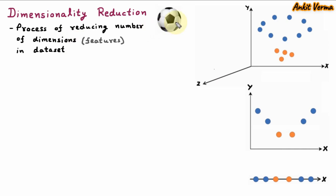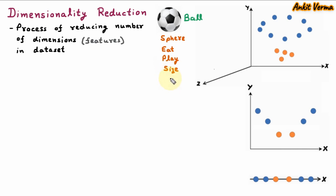Let us suppose we are having a ball. It contains various features like the ball should be a sphere, we cannot eat the ball, we can play with the ball, the ball may have a certain size, and the ball may have a certain color. These all are the features by which we can train the model. These features are also called dimensions.